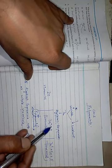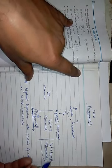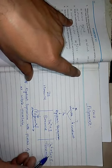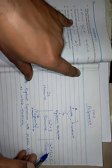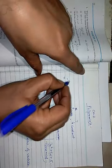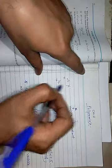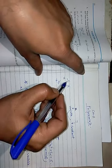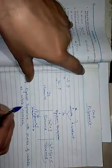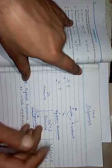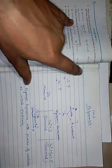Any algebraic expression where the powers of the variable are whole numbers — for example, X raised to power 2, which is a whole number — that is a polynomial. Powers 2, 1, 0 are whole numbers. If X raised to the power 1/2 is there, or X raised to the power −5, then it is not a polynomial, because 1/2 is a fraction and −5 is an integer, not a whole number.